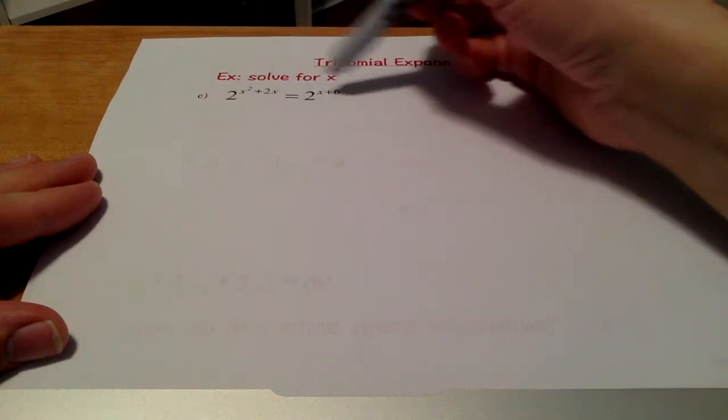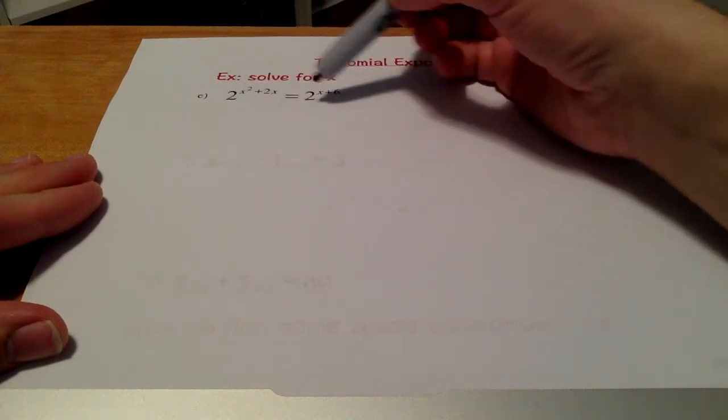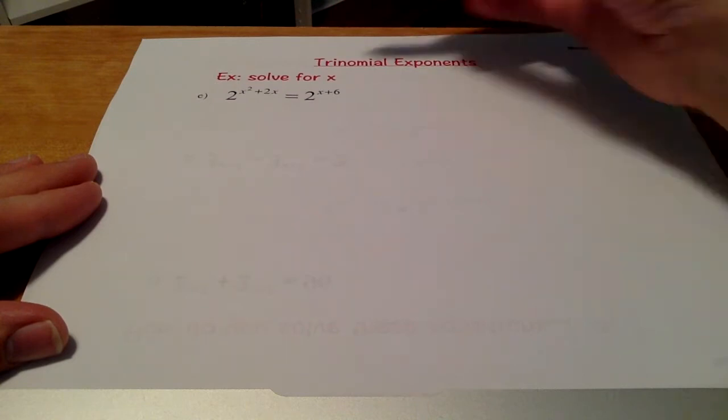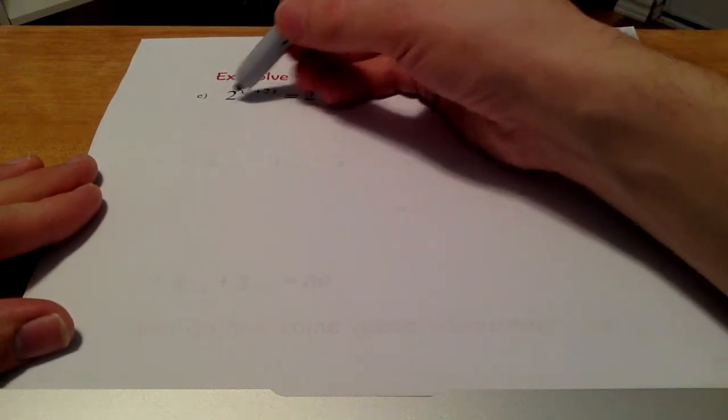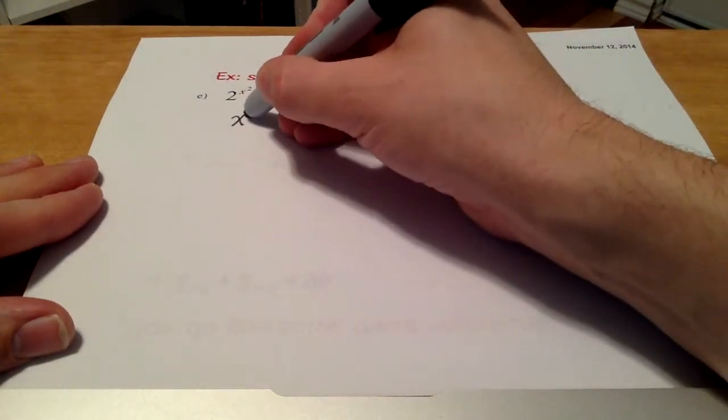In most cases, our primary goal is to get the base to be the same. In this case, we already have 2 and 2. Those are the same base. So we can just neglect those bases and focus on the exponents.